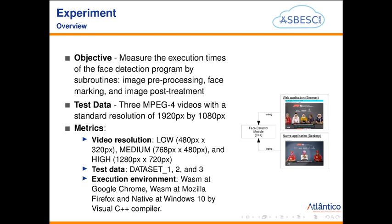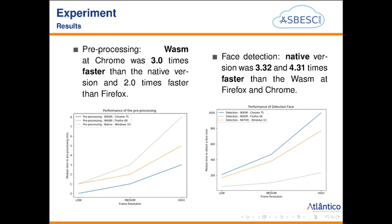To achieve the reference objective in this work, we created a proof of concept that consists of a program to reproduce frames from a video highlighting the detected faces using the Haar cascade algorithm from the OpenCV library. The experiment demonstrates that for processing routines, WebAssembly at Chrome was three times faster than the native version. However, for face detection, a heavy computational process, the native version was three to four times faster than WASM at Firefox and Chrome respectively.